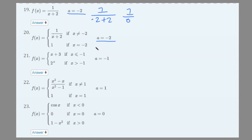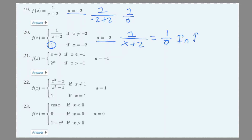Number 20 involves a piecewise function that could result in something like a jump discontinuity. At x equals negative 2, the y-value is 1, so we need to get 1 when we plug in negative 2. But as we concluded, that gives 1 over 0. So we know there's a vertical asymptote, but f(−2) is still defined. That would be an infinite discontinuity.